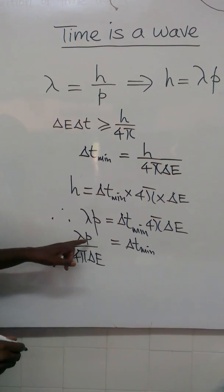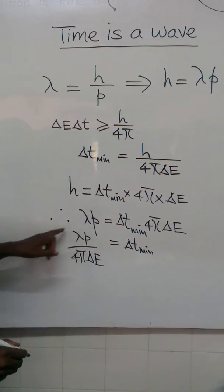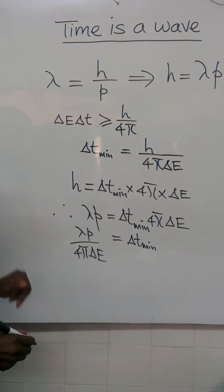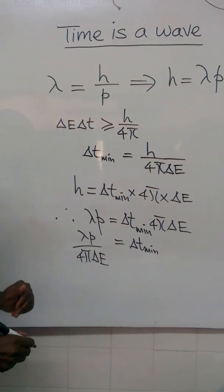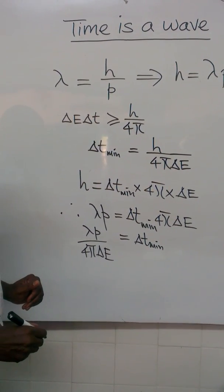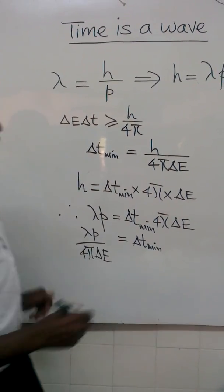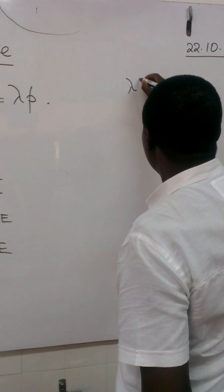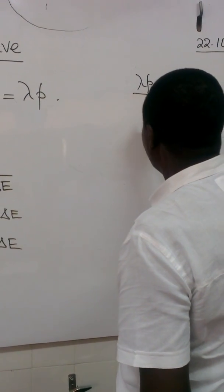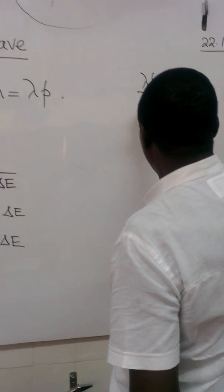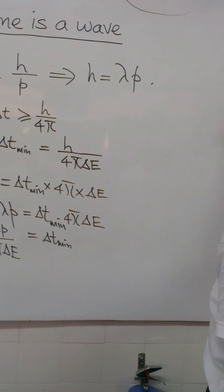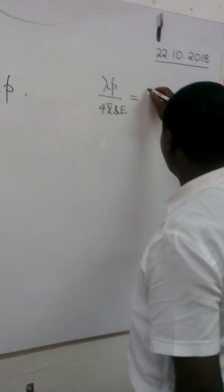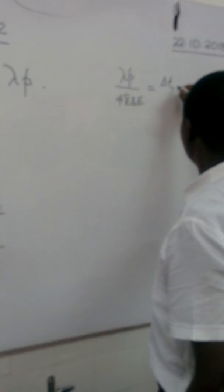Time is directly proportional to wavelength times momentum, and inversely proportional to change in energy. We can restate that equation and say lambda p over 4pi times uncertainty in energy is equal to the minimum uncertainty in time.